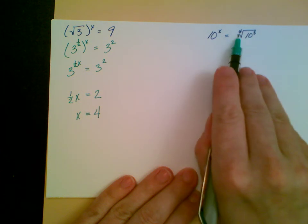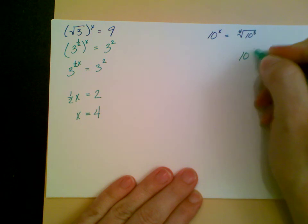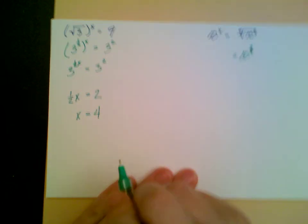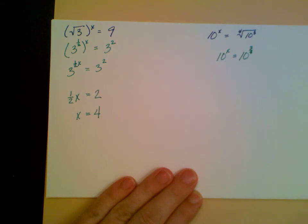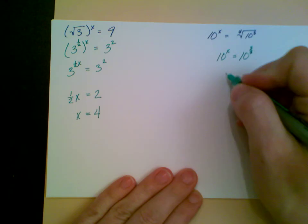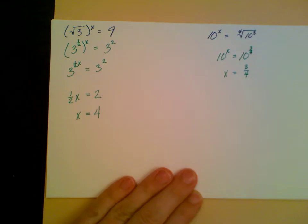This is a fourth root, and so the denominator of my exponent will be 4. So that gives me 10 to the 3 fourths on the right side. Of course, I had 10 to the x on the left side. Now I get to set my exponents equal to each other, and I end up with x equals 3 fourths.